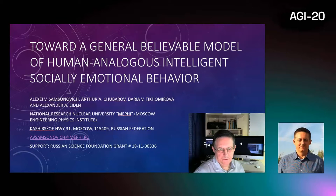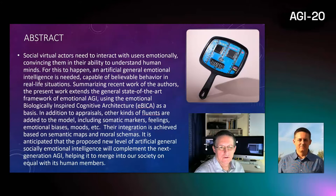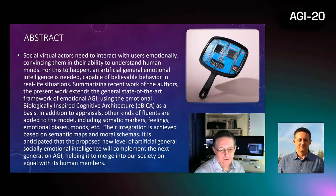This is Alexis Samsonovitch and my talk is on a general believable model of human analogous intelligent social-emotional behavior. The bottom line here is that when you look in a mirror you do not want to see a picture like this. Therefore we need human analogous AGI and therefore we need emotional, biologically inspired cognitive architectures.